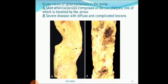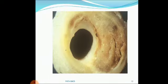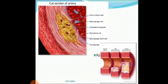This is a cross-section view of atherosclerosis in the aorta. The mild picture shows mild atherosclerosis composed of fibrous plaques indicated by the arrow, and the severe disease shows diffuse and complicated lesions. In the cut section of the vessel, there is classical occlusion of the lumen by atherosclerotic plaque. The cut section of the artery shows tear in the arterial wall, macrophages, cholesterol deposition, red blood cells, foam cells, and fat deposits. In severe atherosclerosis, there is more than 90% lumen occlusion by the atherosclerotic plaque.